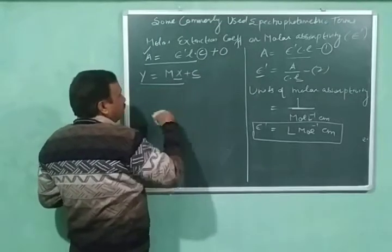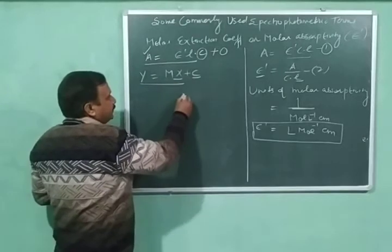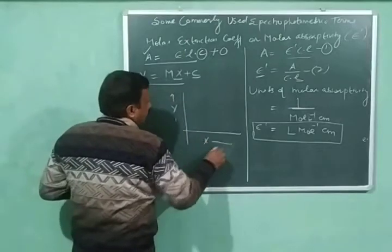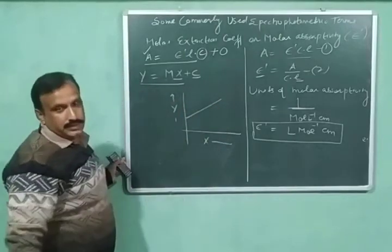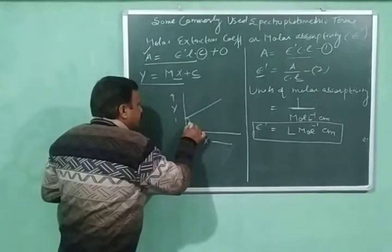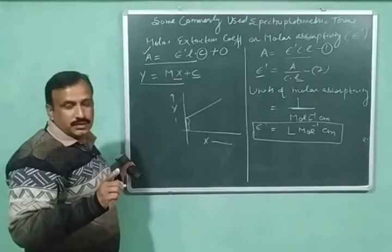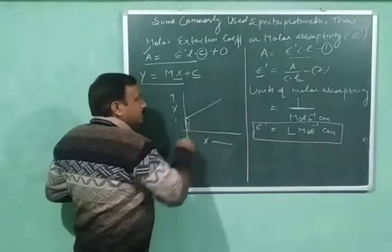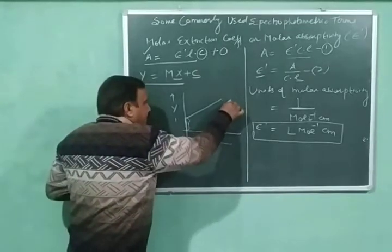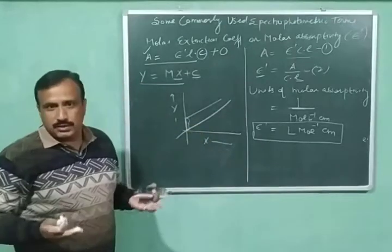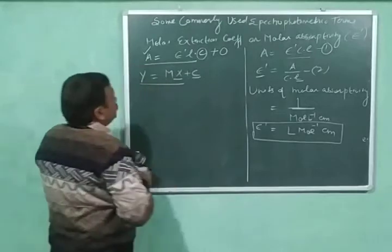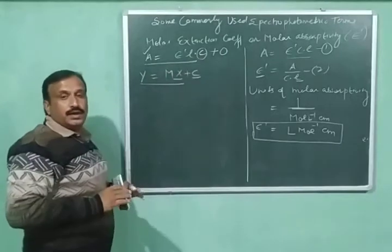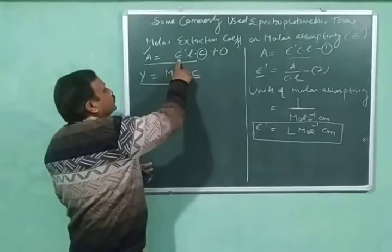Because the intercept is zero, the line passes through the origin. When we plot absorbance versus concentration, we obtain a straight line with slope equal to epsilon prime times L, passing through the origin. The y-axis represents absorbance and the x-axis represents concentration.